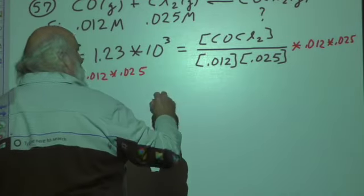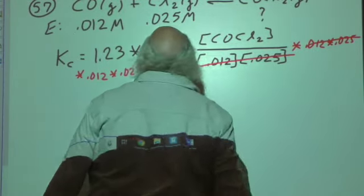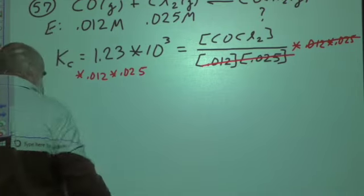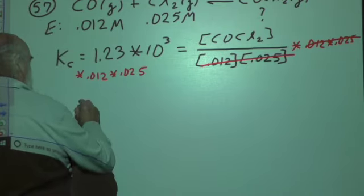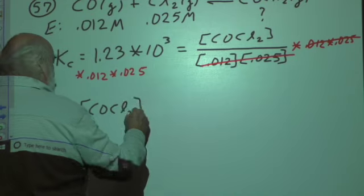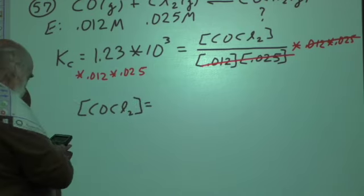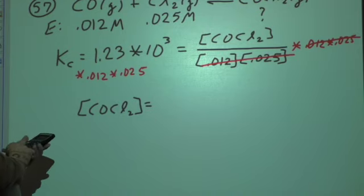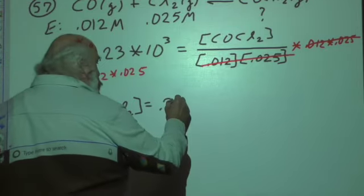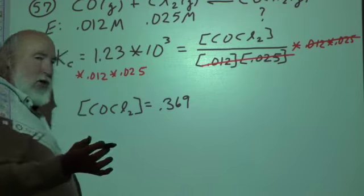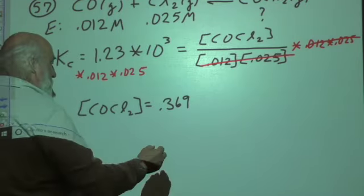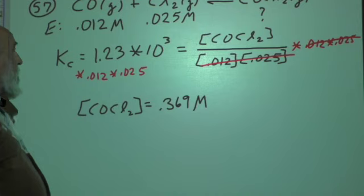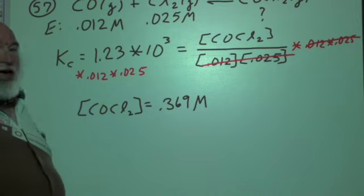This is going to cancel out over here. So our concentration of COCl2 is simply going to be a product of all three of these numbers. So if I do that, I get 0.0269, and because this is concentration, we need to have a label for this. This is moles per liter. That's all there is to that. Just basic algebra skills.